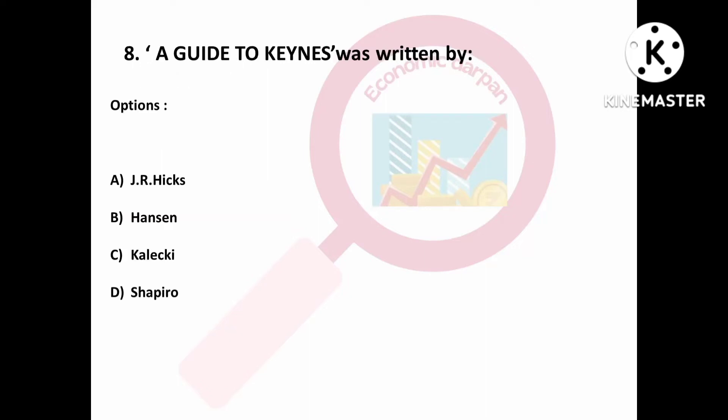Question number eight is: 'A Guide to Keynes' was written by — Option A: J.R. Hicks; Option B: Professor Hansen; Option C: Colkey; Option D: Professor Shapiro. Option B is right — Professor Hansen.